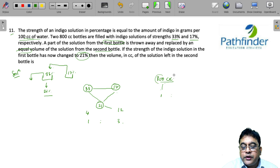So out of 800 cc, if one part is 33% and three parts are 17%, that means three-fourths of 800 cc, which is 600 cc, must be mixed from the 17% bottle.